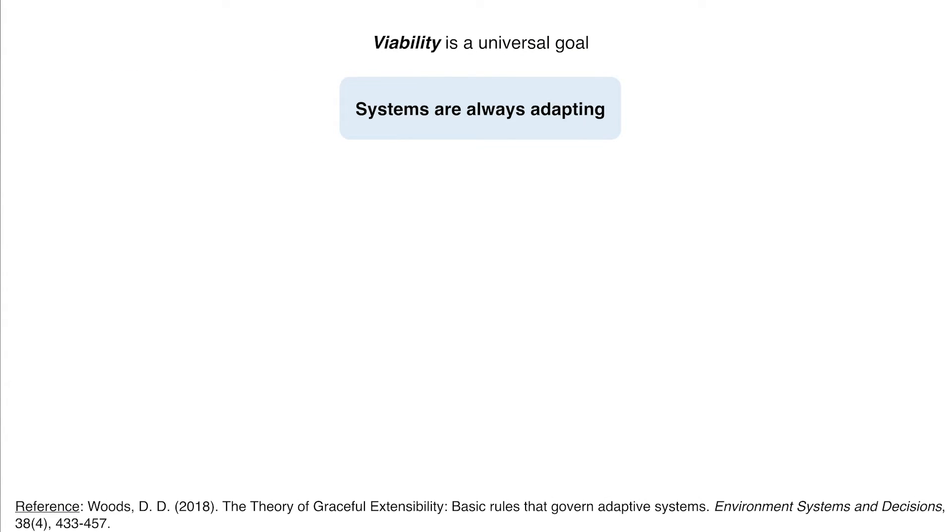The first is that whatever kind of system, whatever kind of role, whatever kind of stakes you have in the systems and organizations that you're active in, there's a universal goal: viability. Viability is the overarching, encompassing target for our behavior — how we do things and how we adapt. We're talking about people, roles, organizations, systems, and technologies we develop, deploy, and use in providing valued services.